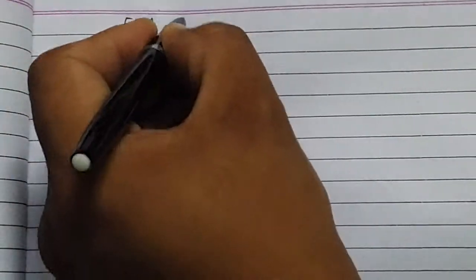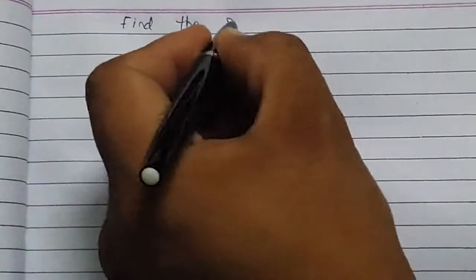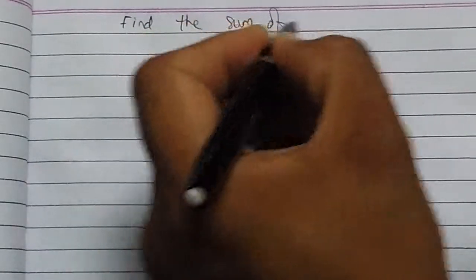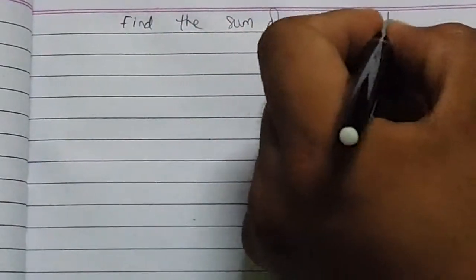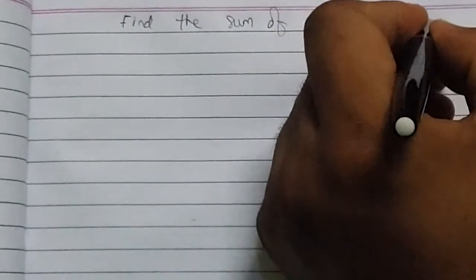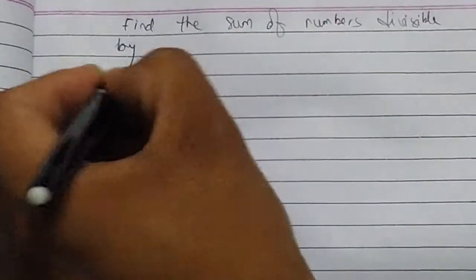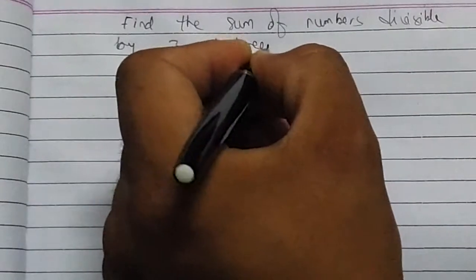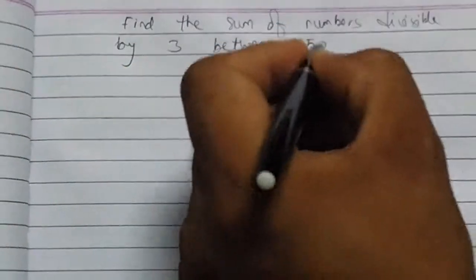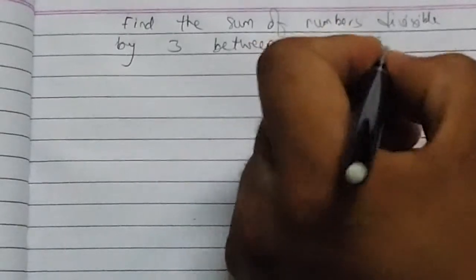Find the sum of numbers divisible by 3 between 50 and 200.